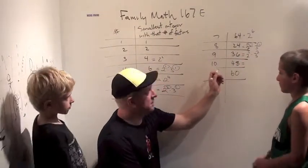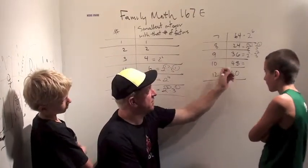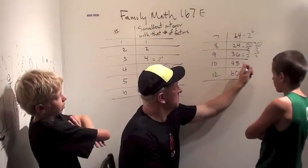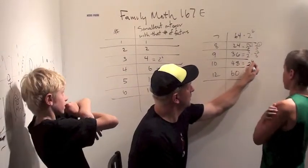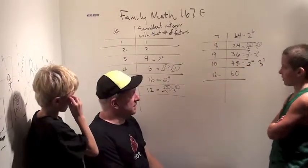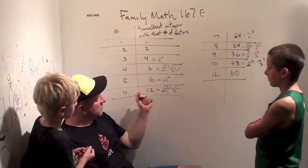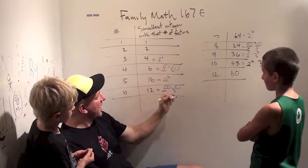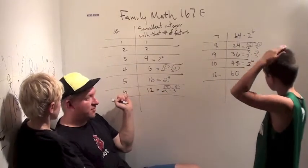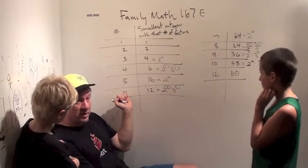To get ten factors, I need a product probably of two and five. So what's forty-eight? Forty-eight is sixteen times three, or two to the fourth times three to the one. Five times two is ten. This pattern suggests that the smallest integer with any given number of factors only uses what primes? Only twos and threes.